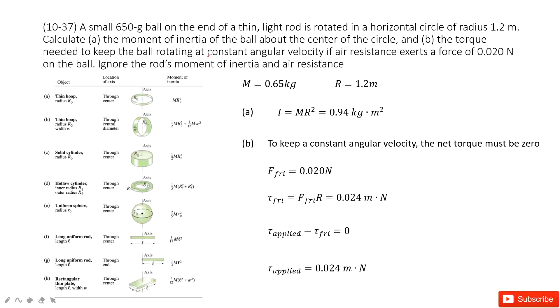At first one, you can see we know a ball. The mass is given and it just rotates on a horizontal circle. The radius is given. Asked to find the moment of inertia.